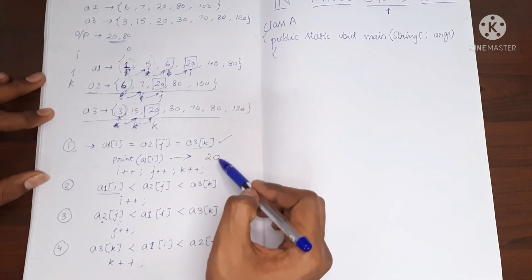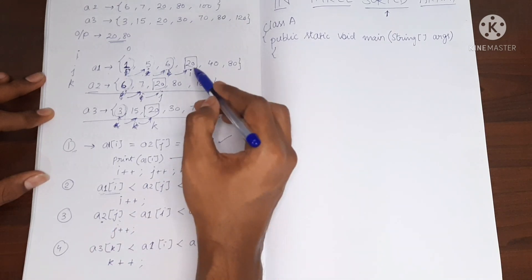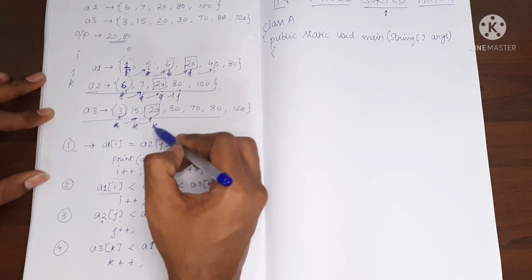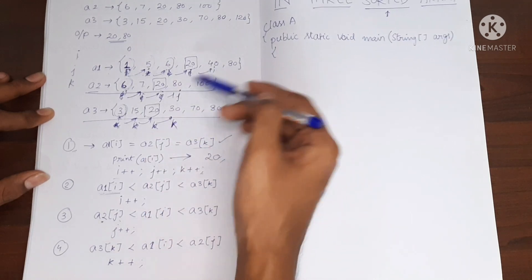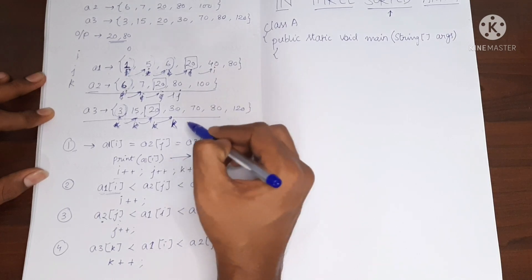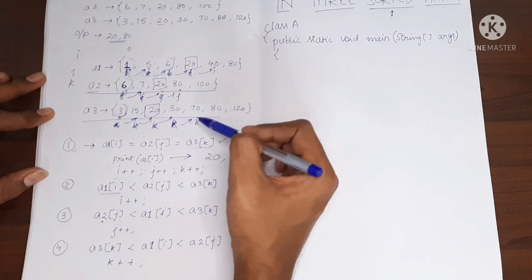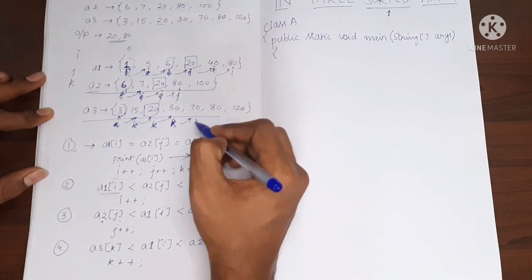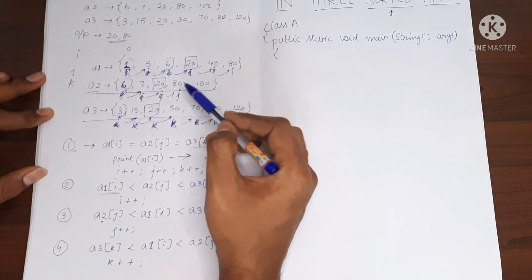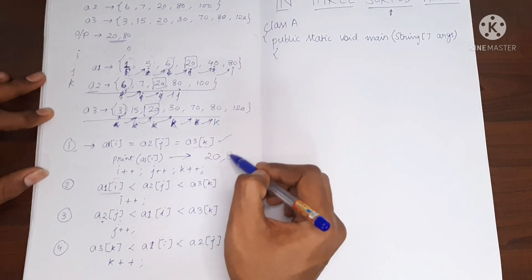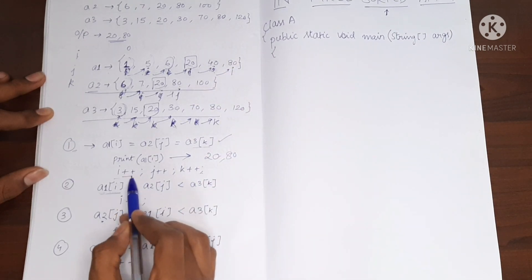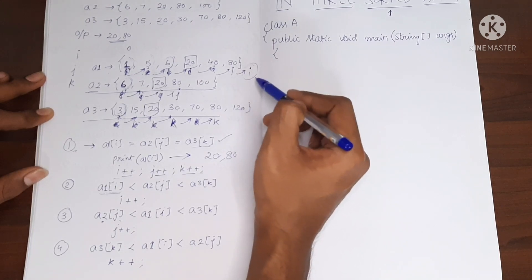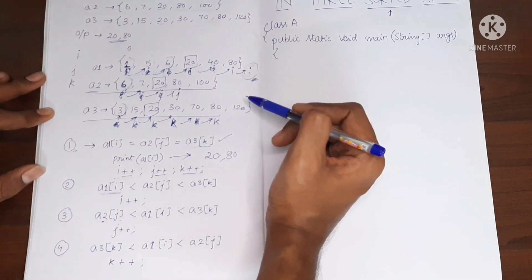This logic runs inside a loop that traverses all three arrays. After printing 20, we increment i, j, and k to their next locations. Now we check: 40, 80, 30 — 30 is the smallest, move k. Then 80, 80, 70 — 70 is the smallest, move k. Now we have 80, 80, 80, so we print 80. After that, i++ goes out of bounds, which is our condition to stop the while loop.